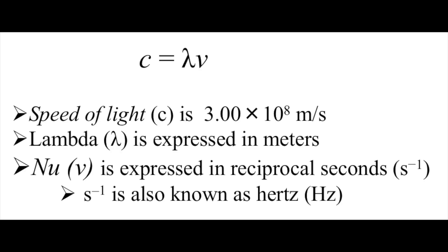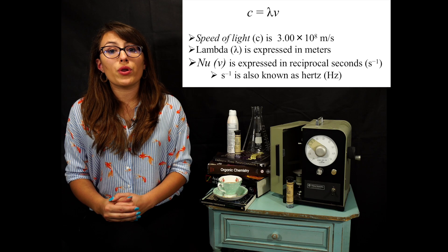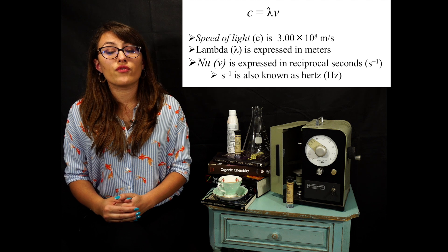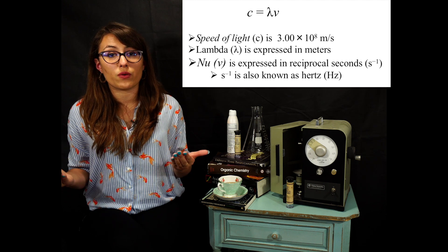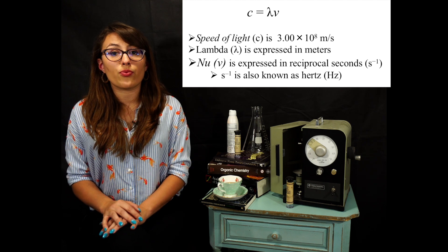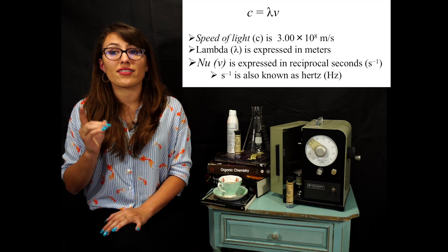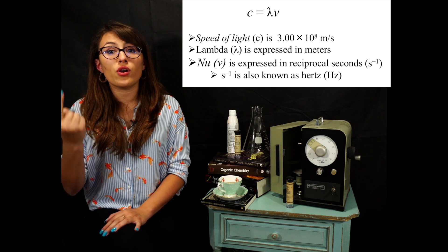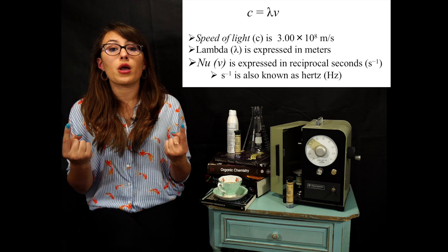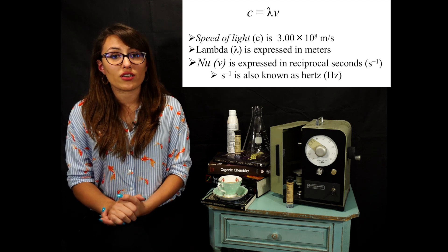The speed of light is proportional to the frequency and wavelength, and the formula is as follows: c is equal to the speed of light, which is equal to wavelength times nu. We will use this equation to convert between wavelength and frequency. It is also important to note that wavelength and frequency represent different ways of specifying the same information — if you know one, you can calculate the other by rearranging the equation.